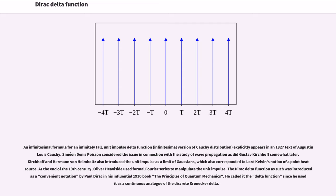An infinitesimal formula for an infinitely tall unit impulse delta function — an infinitesimal version of the Cauchy distribution — explicitly appears in an 1827 text of Augustin-Louis Cauchy. Siméon Denis Poisson considered the issue in connection with the study of wave propagation, as did Gustav Kirchhoff somewhat later. Kirchhoff and Hermann von Helmholtz also introduced the unit impulse as a limit of Gaussians, corresponding to Lord Kelvin's notion of a point heat source. At the end of the 19th century, Oliver Heaviside used formal Fourier series to manipulate the unit impulse.